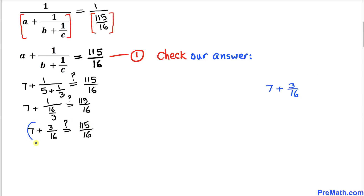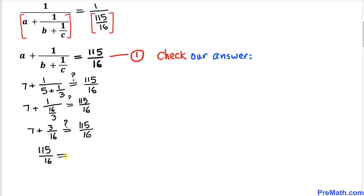Now we have 7 plus 3 over 16. Here 7 is a whole number and 3 over 16 is a fraction. We can merge them as a mixed number: 7 and 3 sixteenths, which equals 16 times 7 is 112, plus 3 is 115, divided by 16. Thus the left hand side is 115 divided by 16, which equals the right hand side 115 divided by 16. This is indeed a true statement.